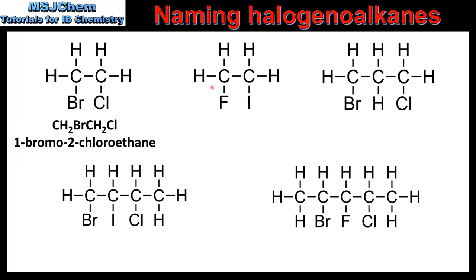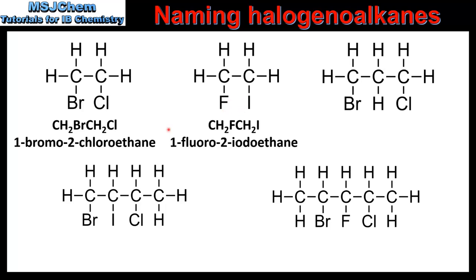In our next example we have 2 carbon atoms in the longest chain with one carbon atom bonded to a fluorine atom and the other bonded to an iodine atom. Carbon 1 carries the fluorine atom because F comes before I in the alphabet, so this compound is named 1-fluoro-2-iodoethane.